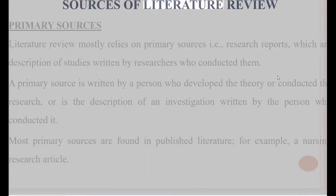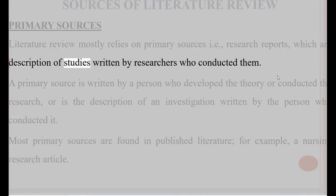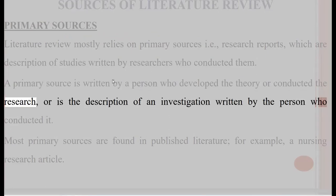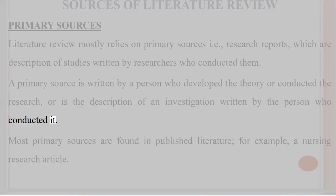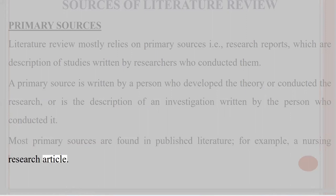Sources of literature review — primary sources. Literature review mostly relies on primary sources, i.e., research reports, which are descriptions of studies written by researchers who conducted them. A primary source is written by a person who developed the theory or conducted the research, or is the description of an investigation written by the person who conducted it. Most primary sources are found in published literature, for example, a nursing research article.